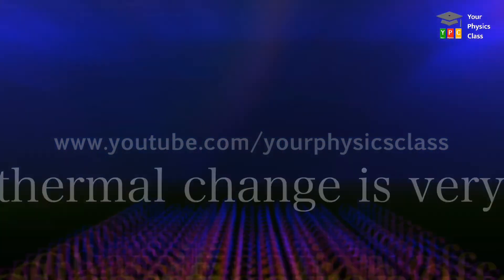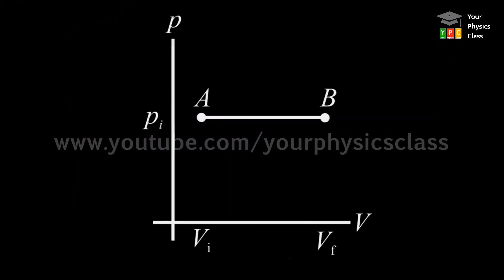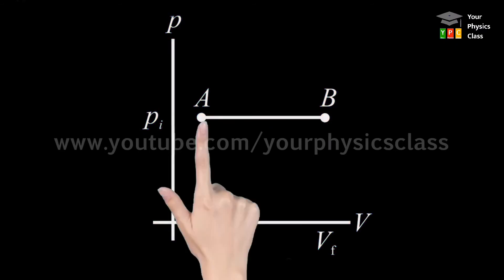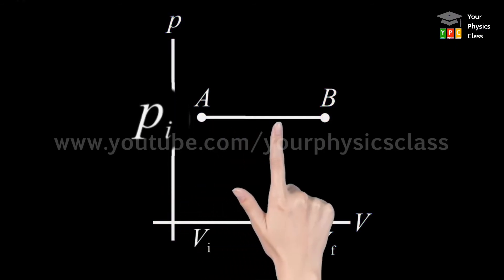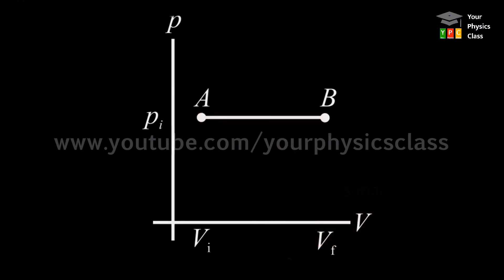The thermodynamic process that takes place at constant pressure is called isobaric process. The PV diagram for this process is shown on your screen. Since the pressure is constant in this process, therefore the PV diagram is called isobars.